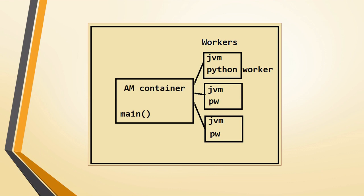For any Spark application, in the AM container the main method will be there. The AM container will distribute the tasks to the worker nodes. In the worker nodes, we will have JVMs — Java Virtual Machines — within the executors to perform the tasks defined in the Spark job, and the results will be sent back to the driver. This is what happens in a normal Spark job.